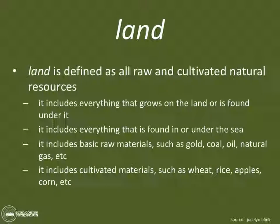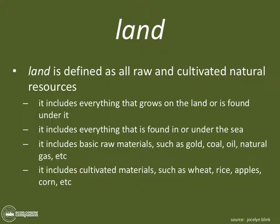Let's take a look at land. Land is defined as all raw materials and cultivated natural resources. It's not just the land itself — it includes everything that grows on land or is found under it, such as minerals and natural resources. It includes everything found in or under the sea, and all basic raw materials such as gold, coal, oil, and natural gas. It also includes all cultivated materials such as wheat, rice, apples, or corn. It is everything we need in order to produce something, as long as it is in its natural state. Land is the first factor of production — super important.